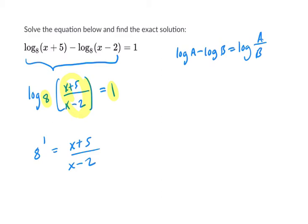Then I would just multiply both sides by x minus 2. Let's see what happens. That would get us 8x minus 16, multiplied x and negative 2 by 8. And then on the right-hand side, they would cancel out, and you get x plus 5. Subtract x on both sides and add 16. You get 7x equals 21, and x is 3.